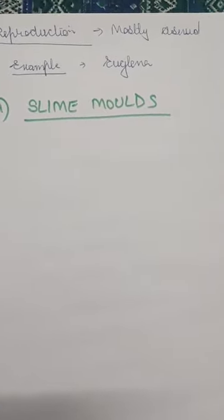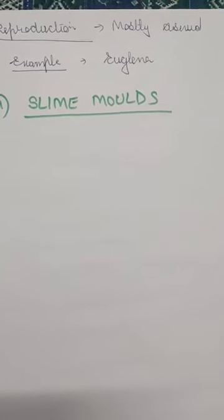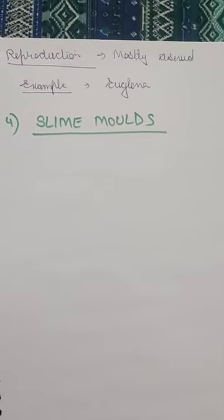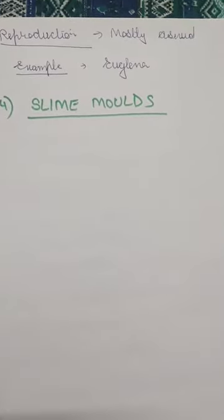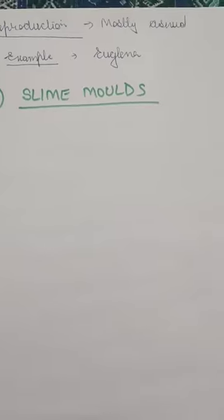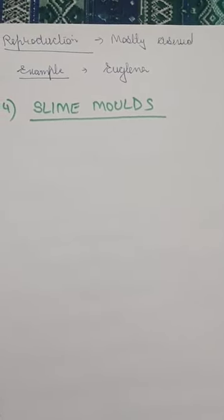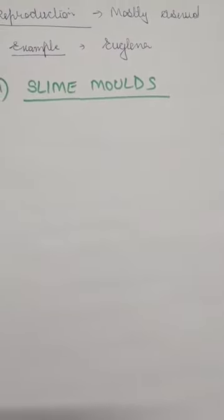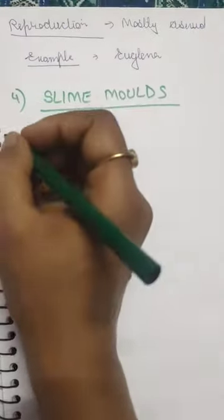Now, as the name suggests, slime molds are slimy and sticky. Molds are those organisms which form a white or fungus-like substance over things — like the little green part on bread, which is a kind of fungi. Slime molds also resemble fungi, but they are not actually fungi.